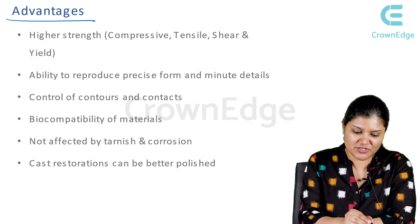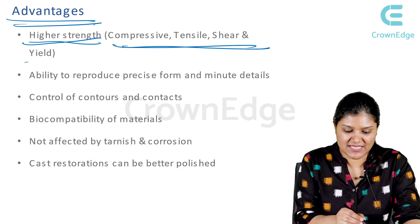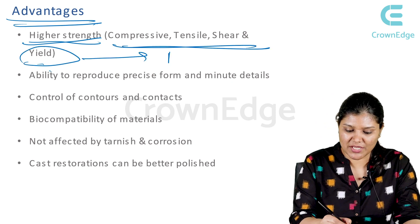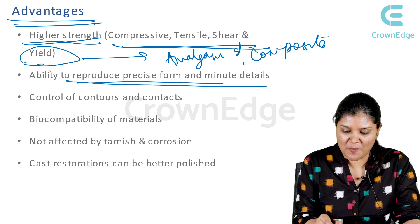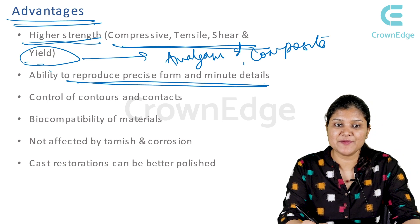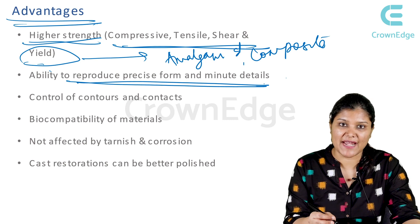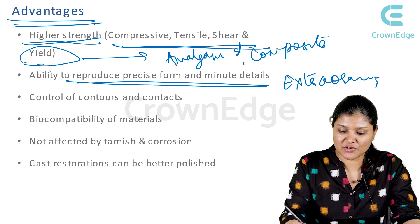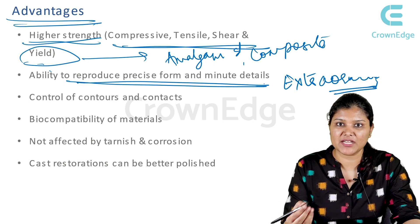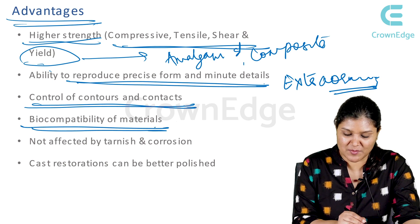Now the advantages of cast metal restorations: higher strength — this restoration has very high compressive, tensile, shear, and yield strength, mostly in comparison to amalgam and composite. Ability to reproduce precise form and minute details — it gives the best control over contacts and contours, so it is a very precise restoration. Because it is fabricated extraorally, lab control gives it better polishability and better control of contacts and contours.